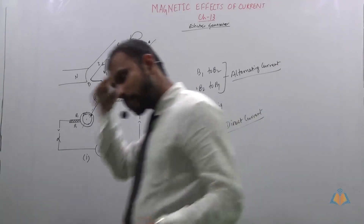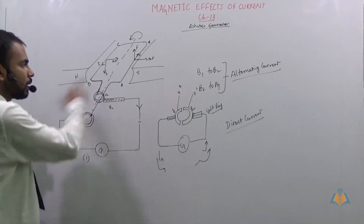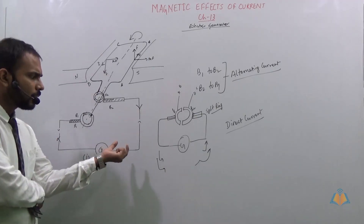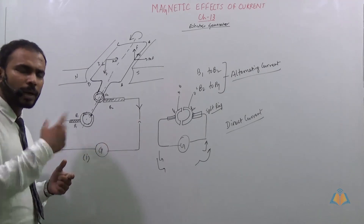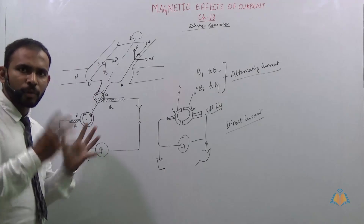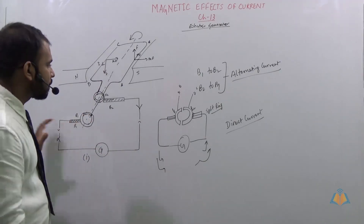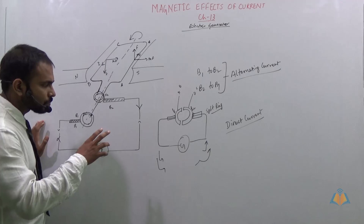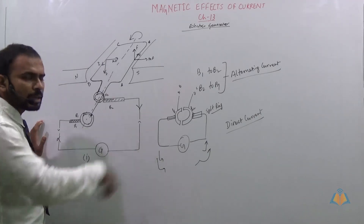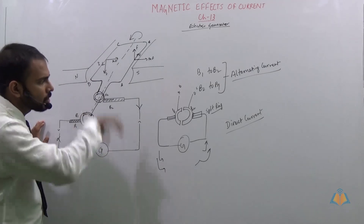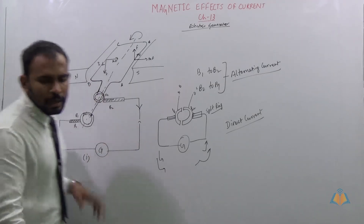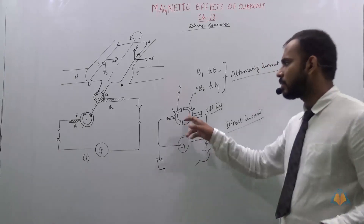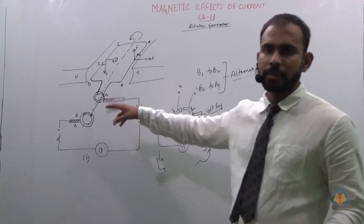Some students might think a bulb connected would glow and go off repeatedly — but that is not the case. Current is always present in the circuit; only its polarity changes. In India, it takes one-hundredth of a second to change polarity. To summarize: to get AC current from a generator, use slip rings; to get DC current from a generator, use commutator rings.